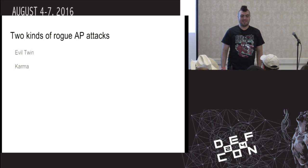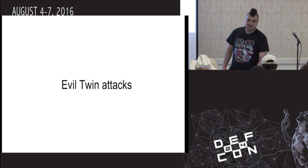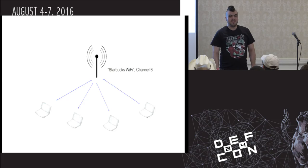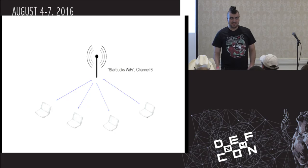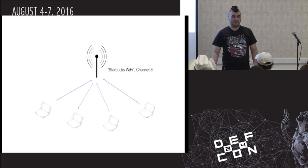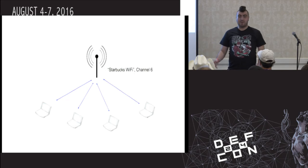We're going to be talking about two kinds of rogue AP attacks today: the evil twin attack and the karma attack. So let's talk about evil twin attacks. Suppose we're sitting downstairs and we're all connected to one of the legitimate access points for the DEF CON open network. That access point is running on channel 6 and has the SSID set to DEF CON open Wi-Fi. If we were to spin up our own hotspot with the same SSID and the same channel, how would our connected laptops be able to tell the difference between the legitimate access point and the one we just created?